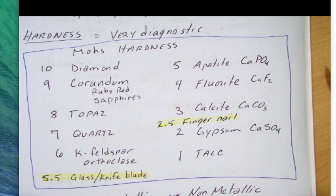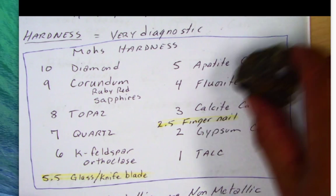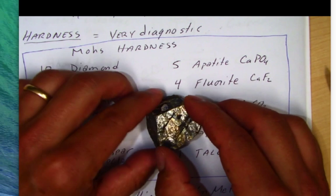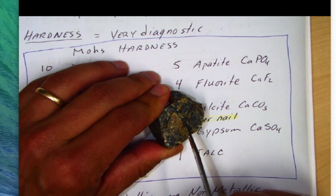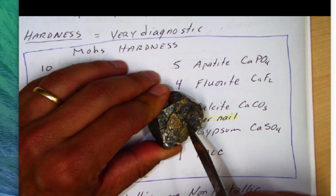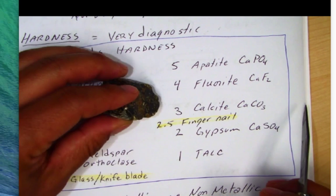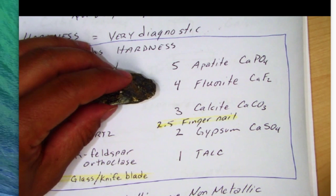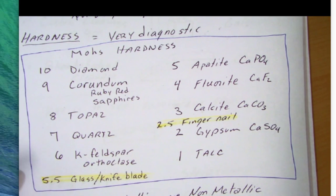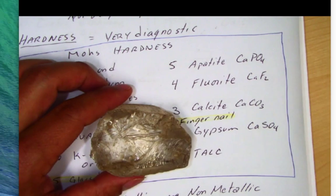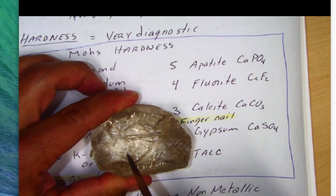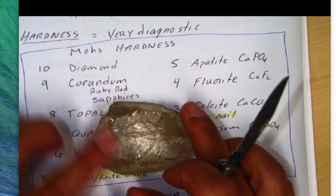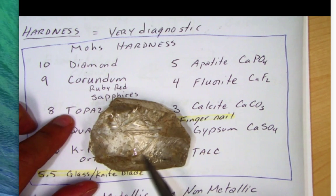Looking at sphalerite, I think sphalerite should be softer — I should be able to scratch it with my knife. And there you go, I'm scratching it. So sphalerite is softer than my knife, considered one of the softer minerals. For quartz, this quartz crystal will be hard and I cannot scratch it. In fact, some of my metal is probably being rubbed off onto the quartz crystal.